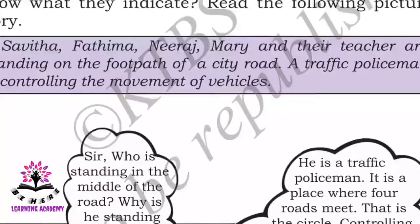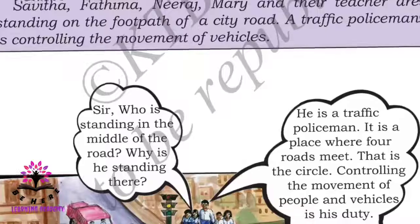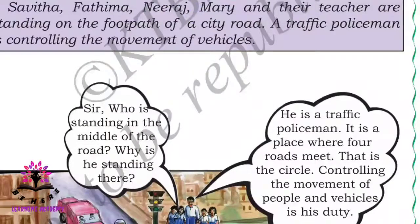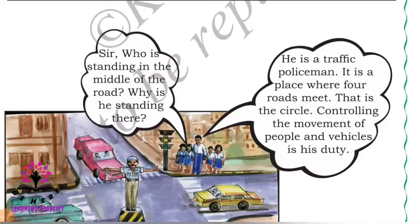Using a small story - Savita, Fatima, Neeraj, and Mary are standing on the footpath of a city road. A traffic policeman is controlling the movement of vehicles. Who is standing in the middle of the road and why? He is a traffic policeman. It is a place where four roads meet - that is the circle. Controlling the movement of people and vehicles is his duty.